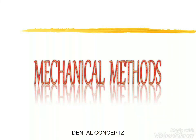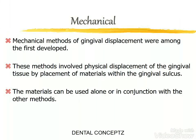Mechanical methods of gingival displacement were among the first developed. These methods involve physical displacement of the gingival tissue by placement of materials within the gingival sulcus. The materials can be used alone or in conjunction with other methods.